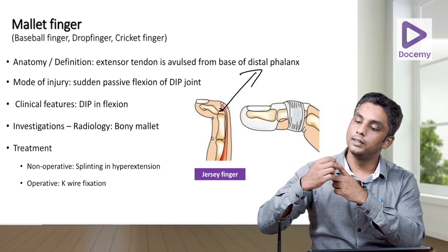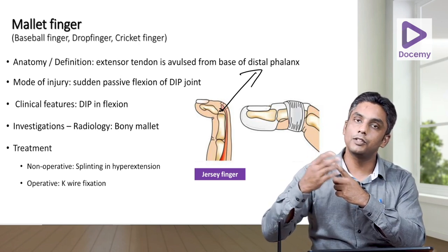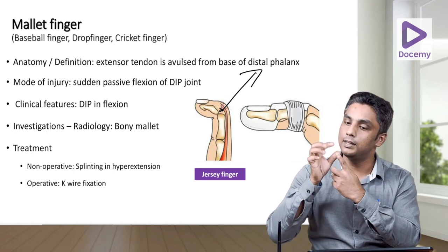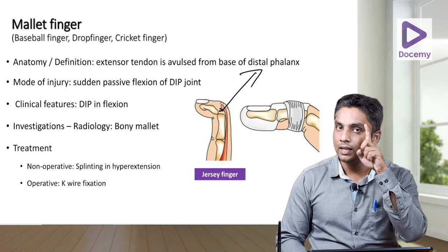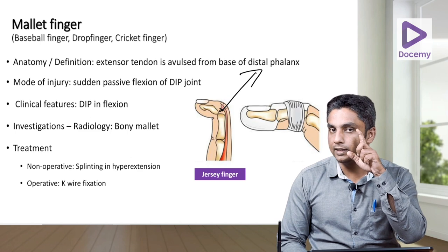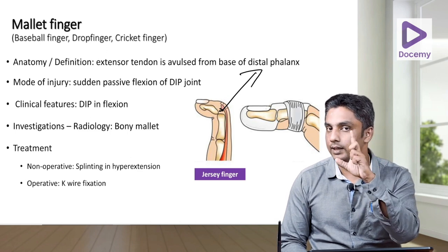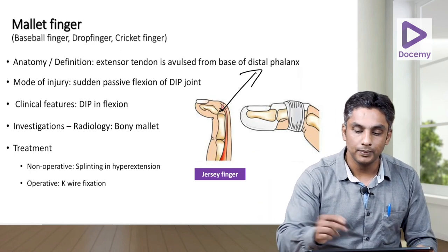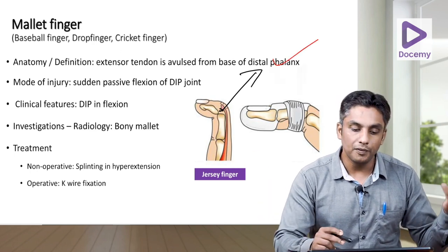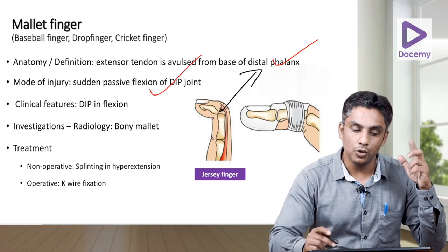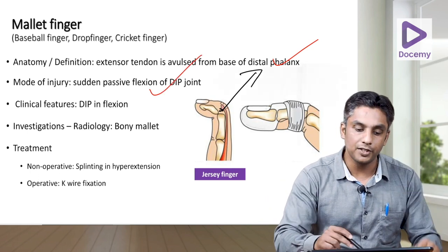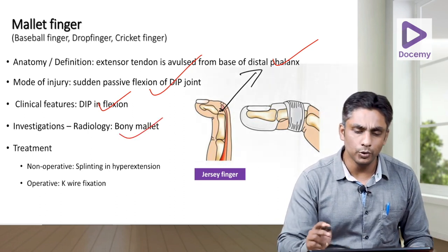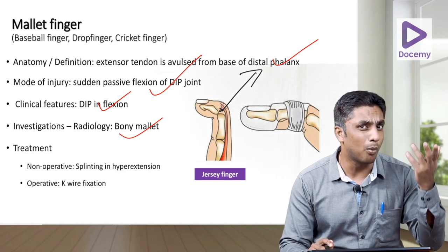Once the extensor digitorum tendon is avulsed from the distal phalanx, extension is lost. The function of extensor digitorum is extension, so you will have a drop of the finger — the distal phalanx at the DIP joint will be in an attitude of flexion. In radiology, if some bone is avulsed from the muscle attachment, you can see a bone fragment — that is called a bony mallet.